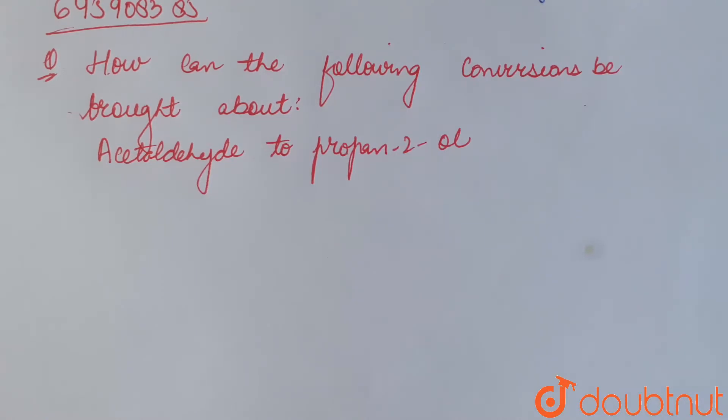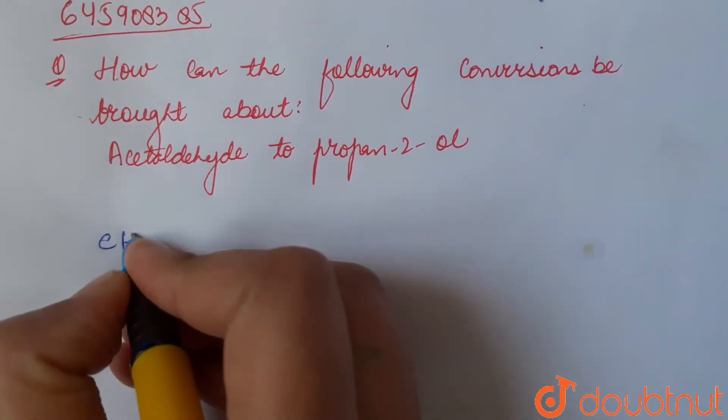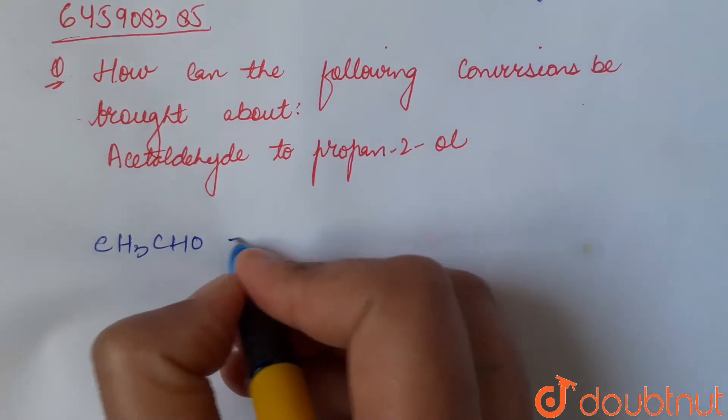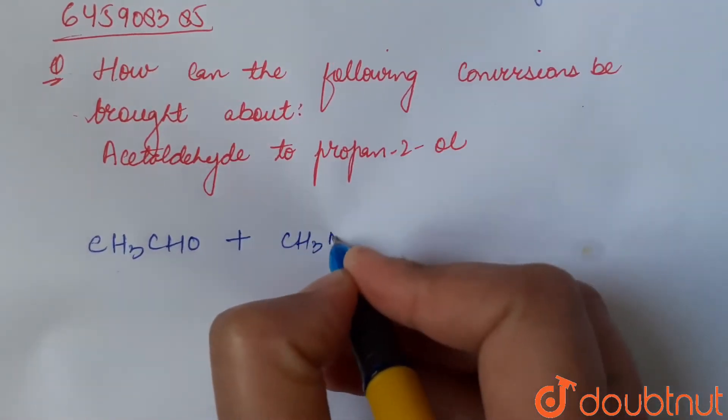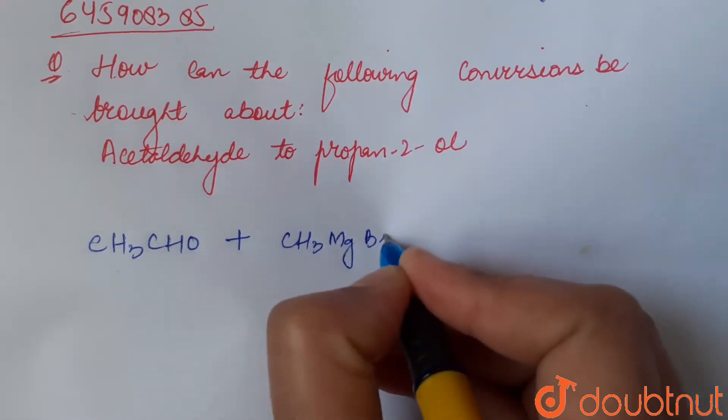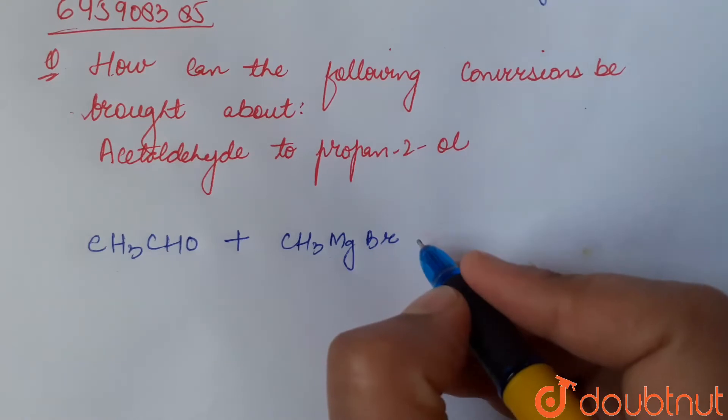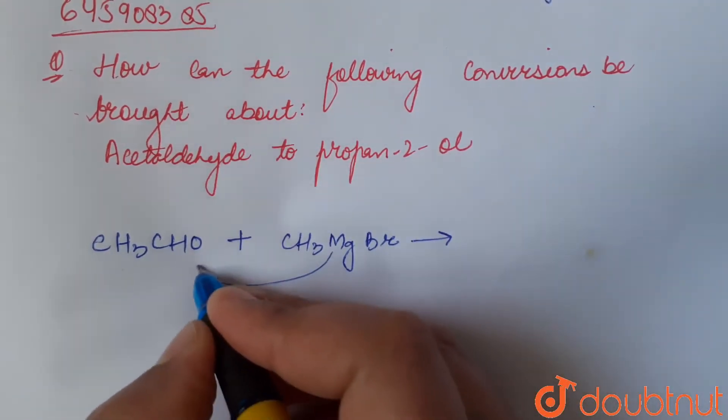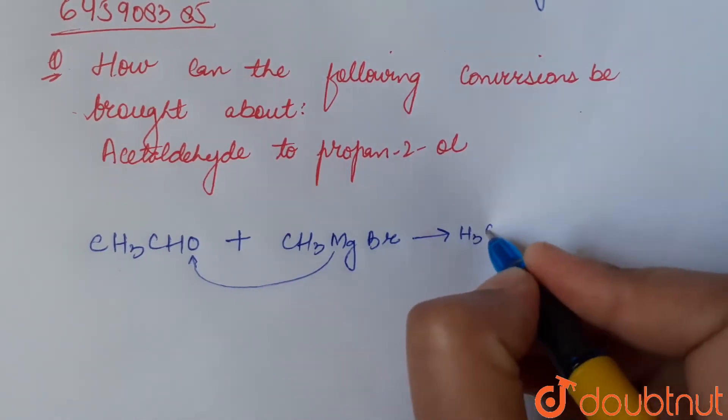Acetaldehyde, CH3CHO, when acetaldehyde is treated with Grignard reagent, that is CH3MgBr, also called as methyl magnesium bromide. Here magnesium attacks oxygen and they form H3C-C-CH3-H-O-MgBr.